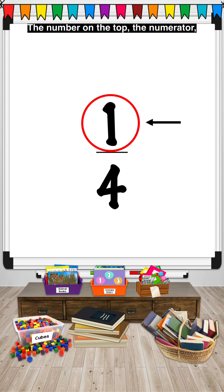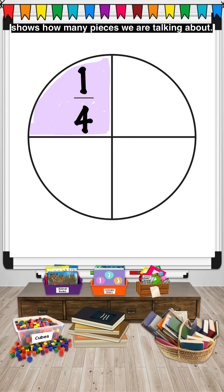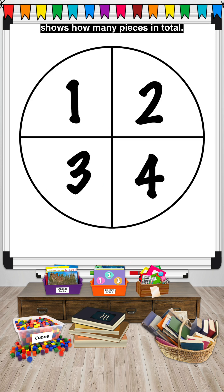The number on the top, the numerator, shows how many pieces we are talking about. The number on the bottom, the denominator, shows how many pieces in total.